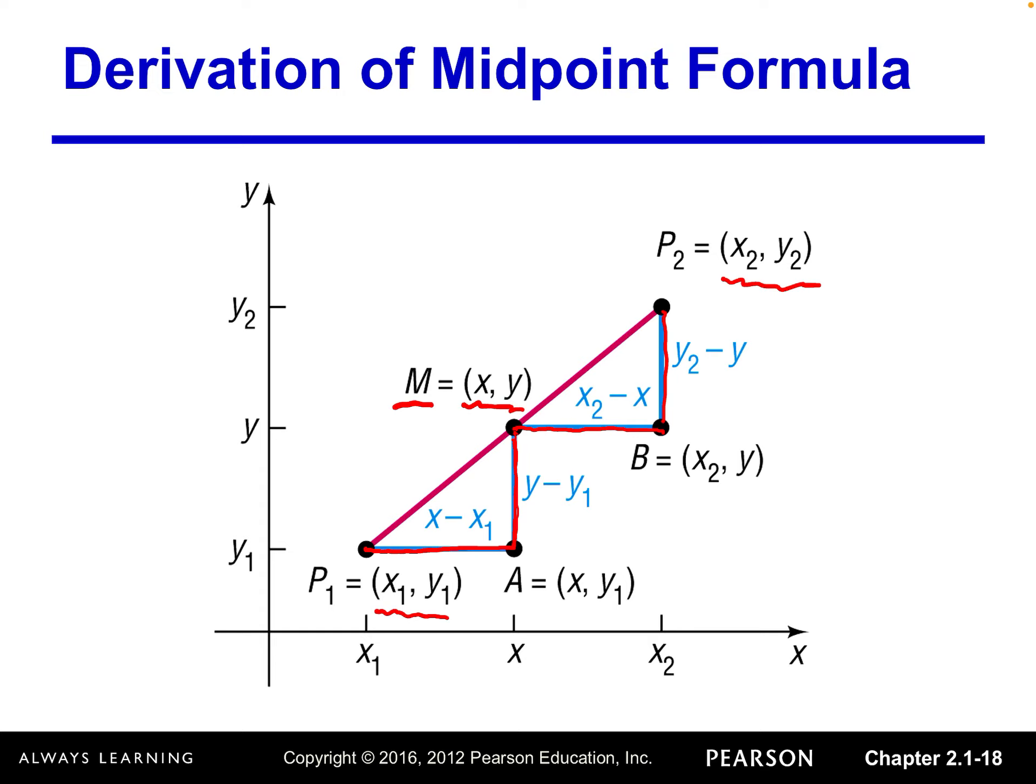And then we can see these two right triangles, they are identical. And then these two sides should equal. So where the X minus X1 is coming from, this is X and Y.